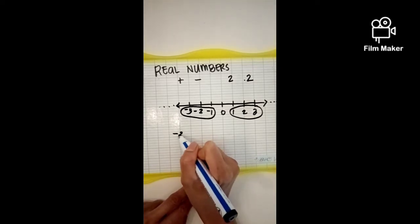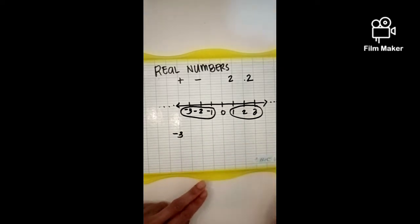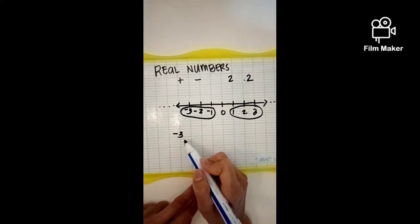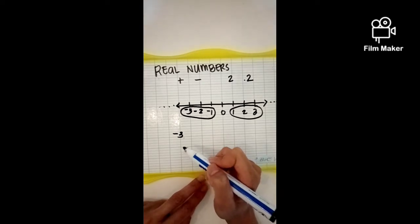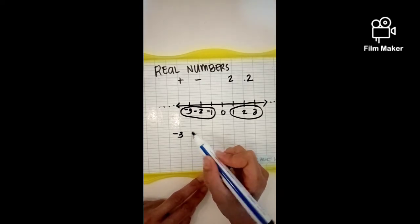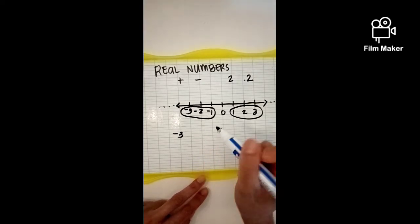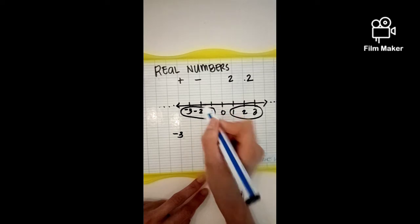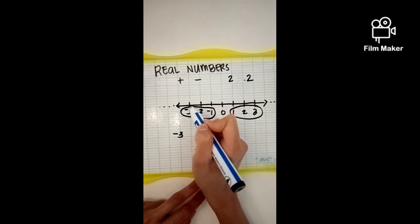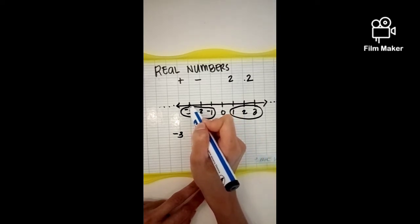For example, negative three. Can you consider negative three as a real number? Yes. The answer is yes, because you can find negative three on the number line.